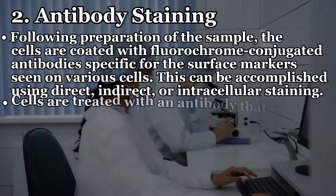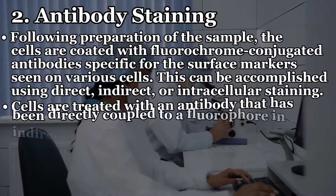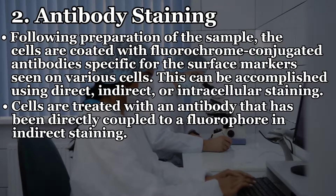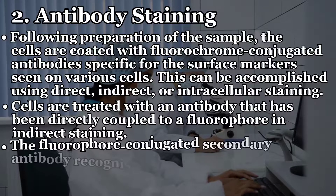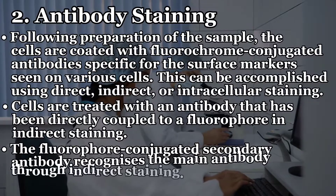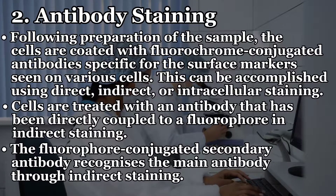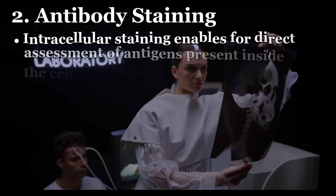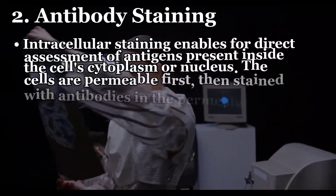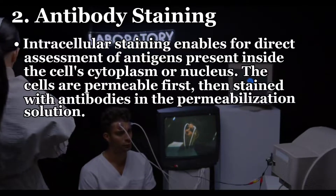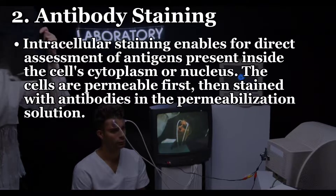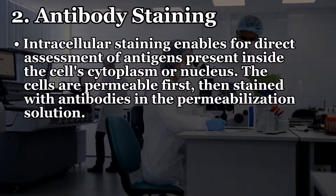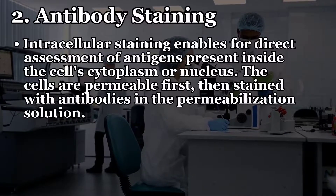In direct staining, cells are treated with an antibody that has been directly coupled to a fluorophore. In indirect staining, a fluorophore-conjugated secondary antibody recognizes the primary antibody. Intracellular staining enables direct assessment of antigens present inside the cell cytoplasm or nucleus — the cells are permeabilized first and then stained with antibodies in a permeabilization solution.